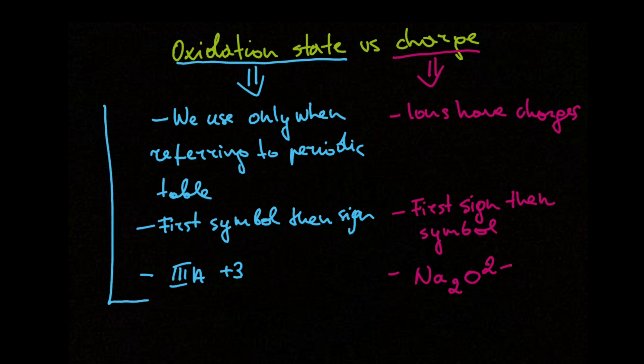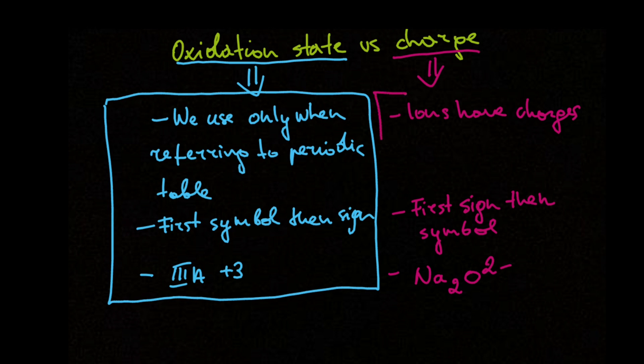So don't mix oxidation state and charge. Only use oxidation state when you are talking about the periodic table or the exercise asks you to write the oxidation state of a certain element. When writing reactions, compounds, or ions, we only use charge. Thank you for watching this quick lesson. I hope you learned something and enjoyed. See you soon.